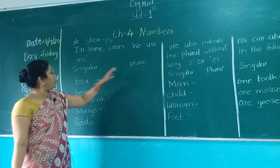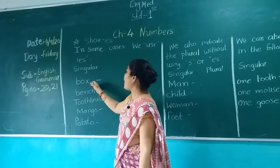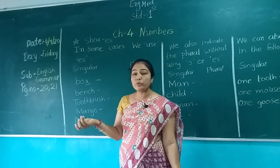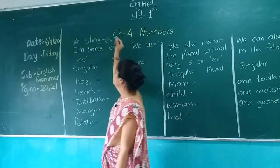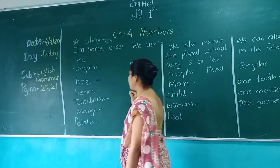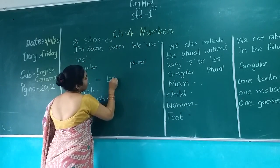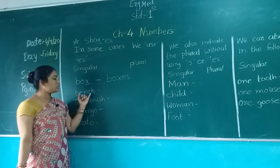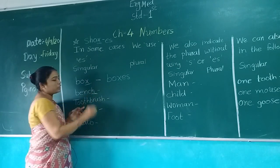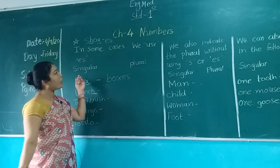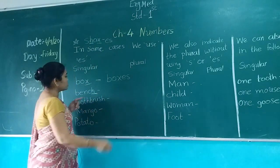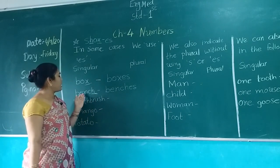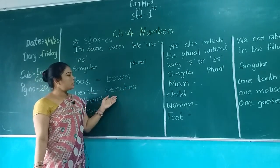Singular and plural. B-O-X, Box. Last letter is X. If X is there, we have to add ES. So we write B-O-X-E-S. B-E-N-C-H, Bench. Last letter is H. If last letter is H, we have to add ES. So write B-E-N-C-H-E-S, Benches.